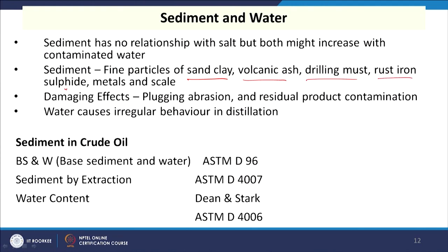When crude oil is extracted, it also contains different types of sediments — basically sand, clay, volcanic ash, drilling mud, rust, iron sulphide, metals, and different scales. The presence of these sediments and water affects the refining process, causing plugging, abrasion, and residual product contamination. Water causes irregular behavior in distillation. Measurement methods include: basic sediment and water by ASTM D96, sediment by extraction ASTM D4007, and water content by ASTM D9 or ASTM D4006.